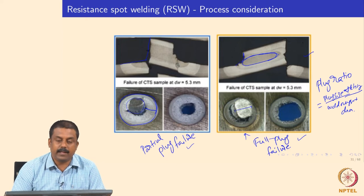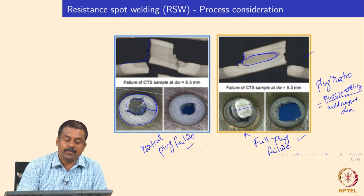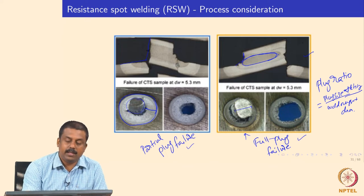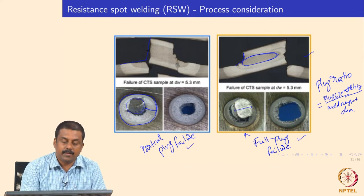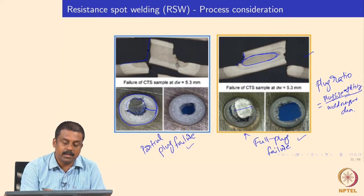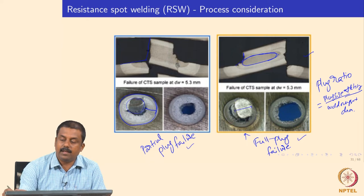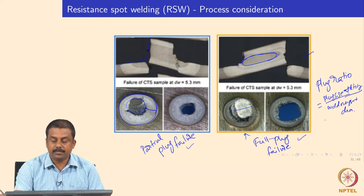To summarize plug ratio calculation: we measure the nugget diameter before testing — using either the cross tension test or L-shaped tensile shear test — and upon failure we identify the plug size. The ratio of plug size to initial nugget diameter gives the plug ratio.